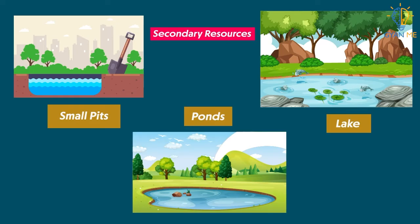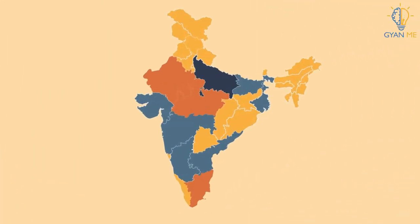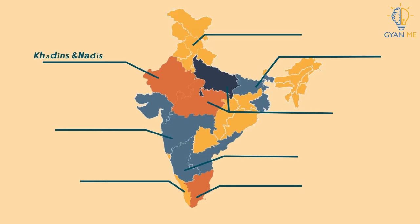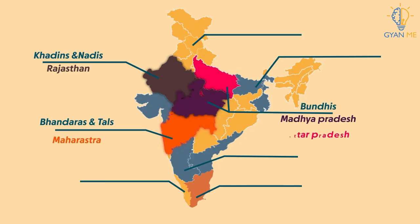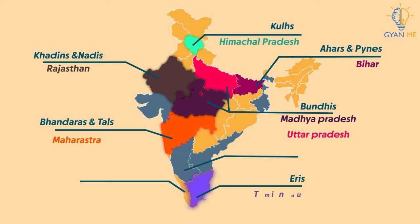All of these indigenous methods have different names in each region. For example: Khadins, Tangs, and Nadis in Rajasthan; Bandharas and Tals in Maharashtra; Bondis in Madhya Pradesh and Uttar Pradesh; Ahars and Pines in Bihar; Kools in Himachal Pradesh — which we have already studied in our previous video; Aharis in Tamil Nadu; Kattas in Karnataka, and so on.